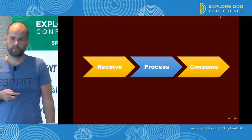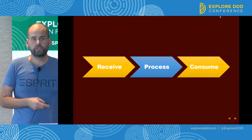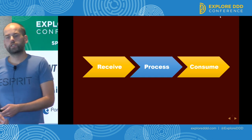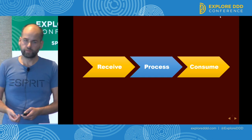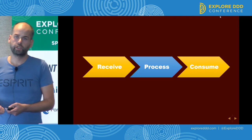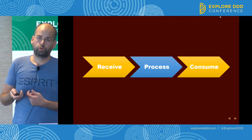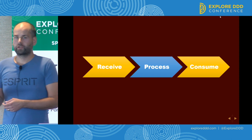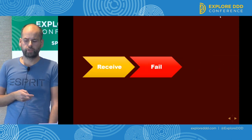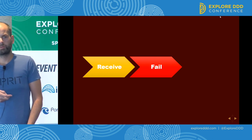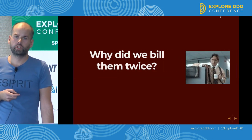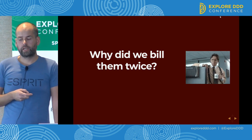They learned something and restructured the process for receiving messages. Now they receive without deleting, process the message, and then mark this message as consumed so that the message broker can delete it. Most message brokers support this mode of operation too. So they were quite happy — if the business logic fails after receiving a message, nothing is wrong because the message goes back to the queue and can be processed later.